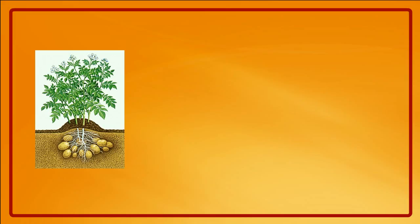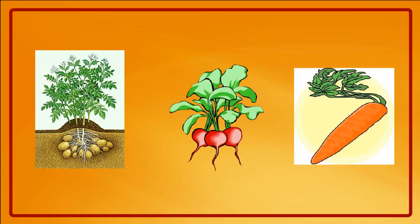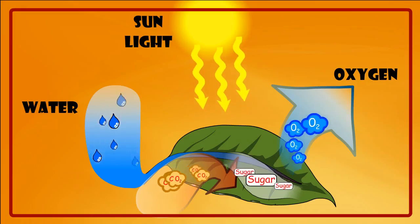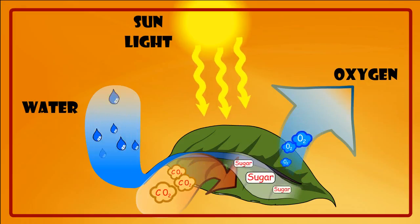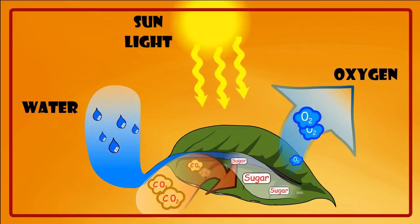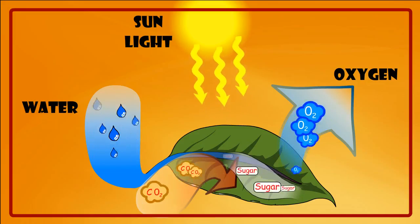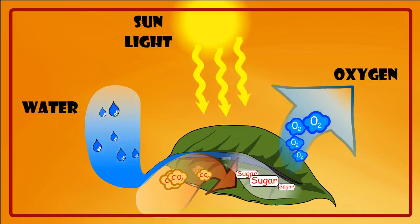Potato, beetroot, carrot, etc. are all examples of food stored by plants. Green plants are called producers or autotrophs because they can make their own food.